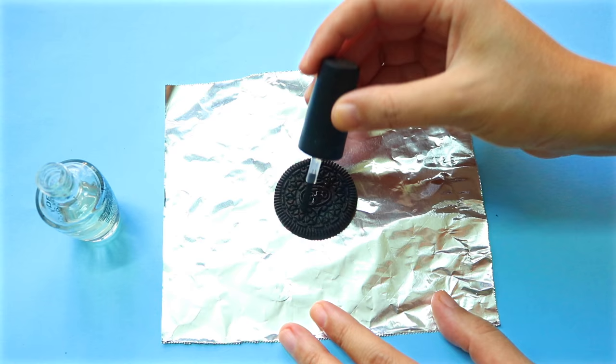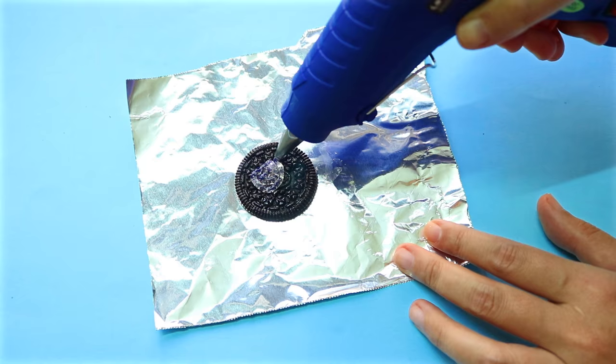Now put it on a piece of aluminum foil and then coat it with some clear nail polish. Once the nail polish has dried, put the hot glue on top of your Oreo.